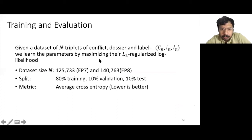Given this dataset, we learn the parameters by maximizing their L2 regularized log likelihood. The dataset has around 100k points for each of the legislatures, and we divide them into 80% for training and 10% each for validation and test. For the evaluation, we use the average cross-entropy as the metric, and thus lower values are better.